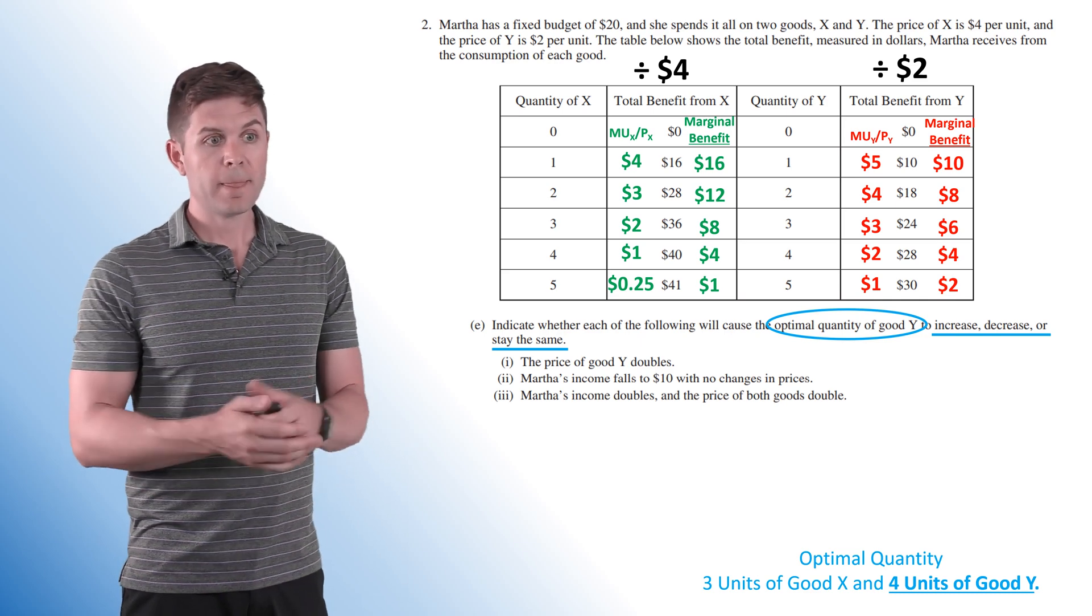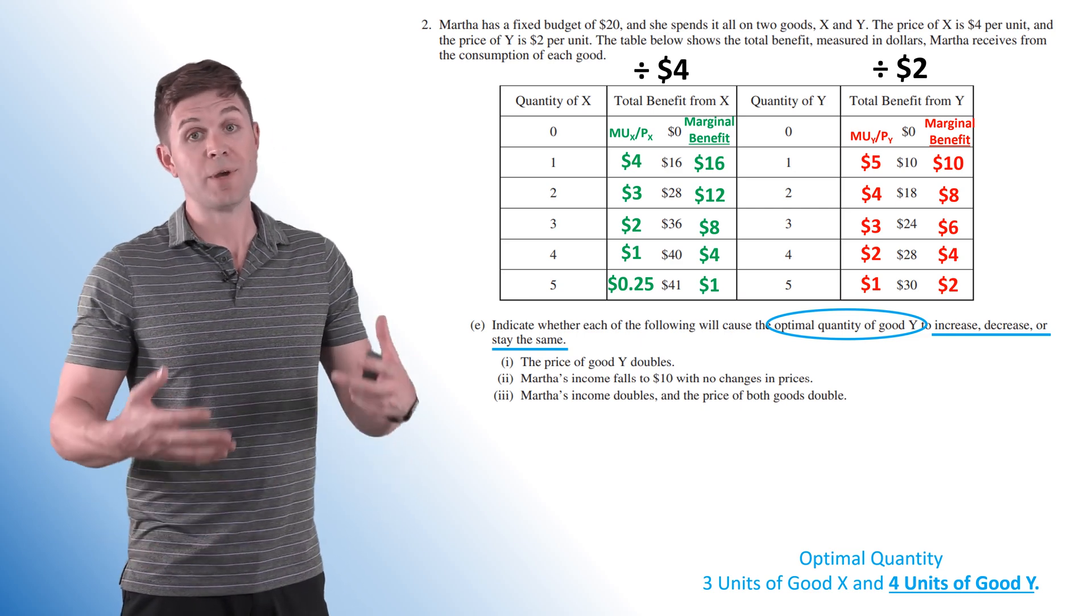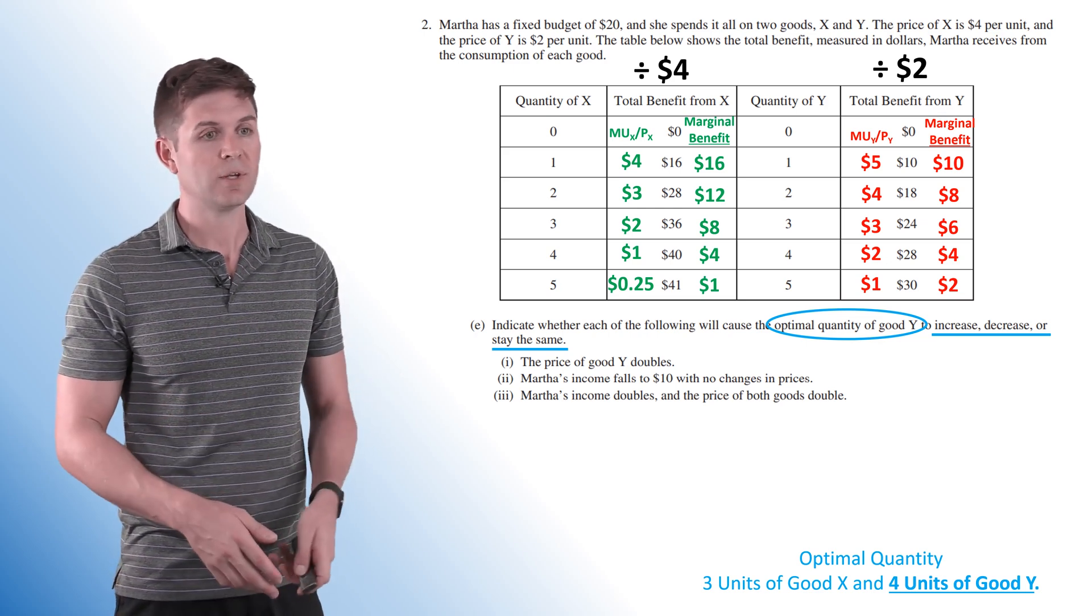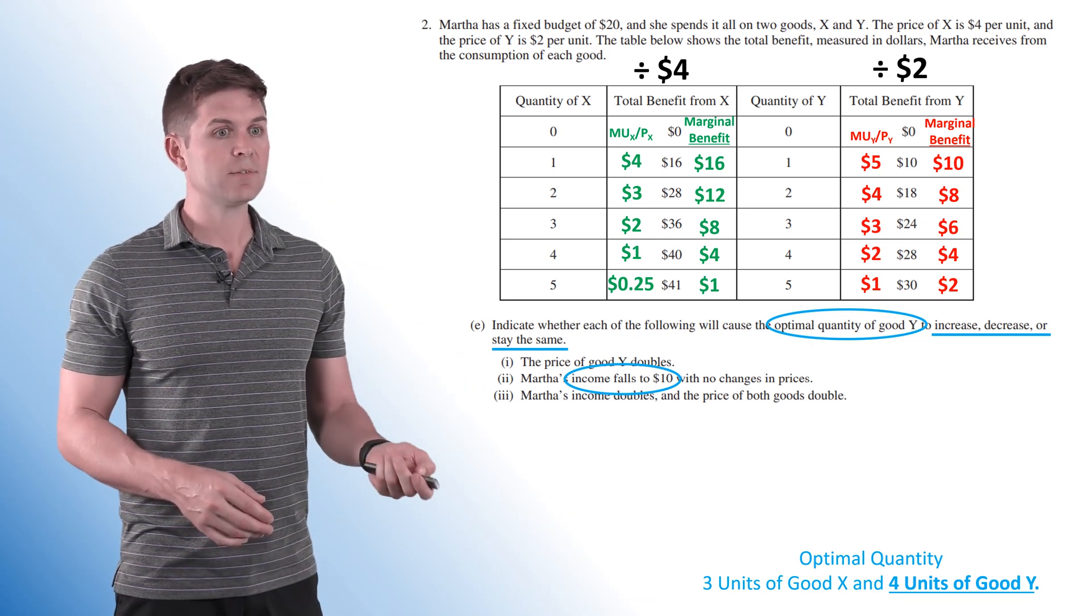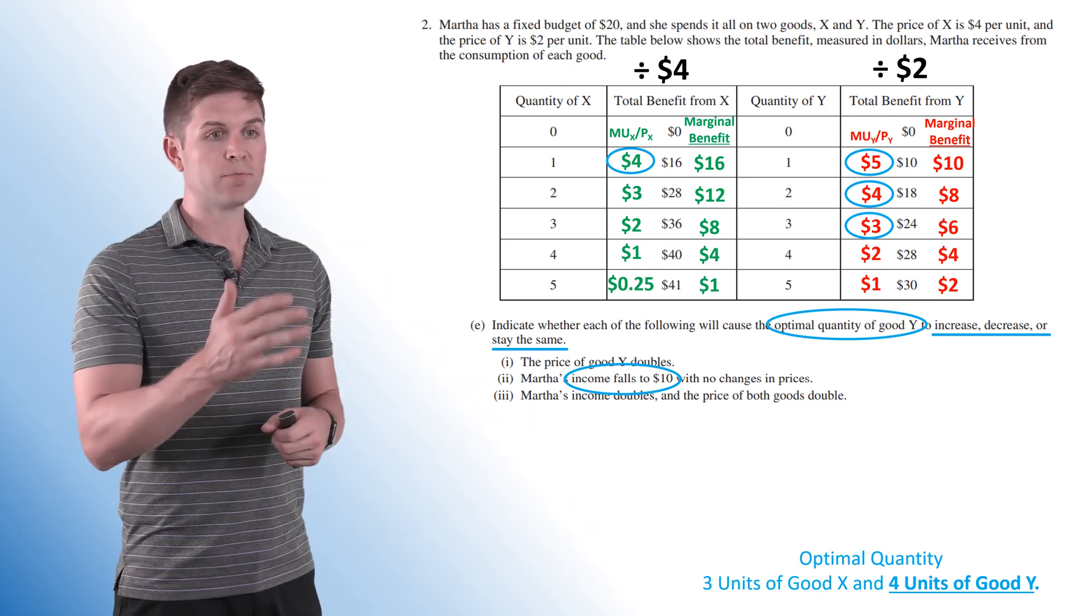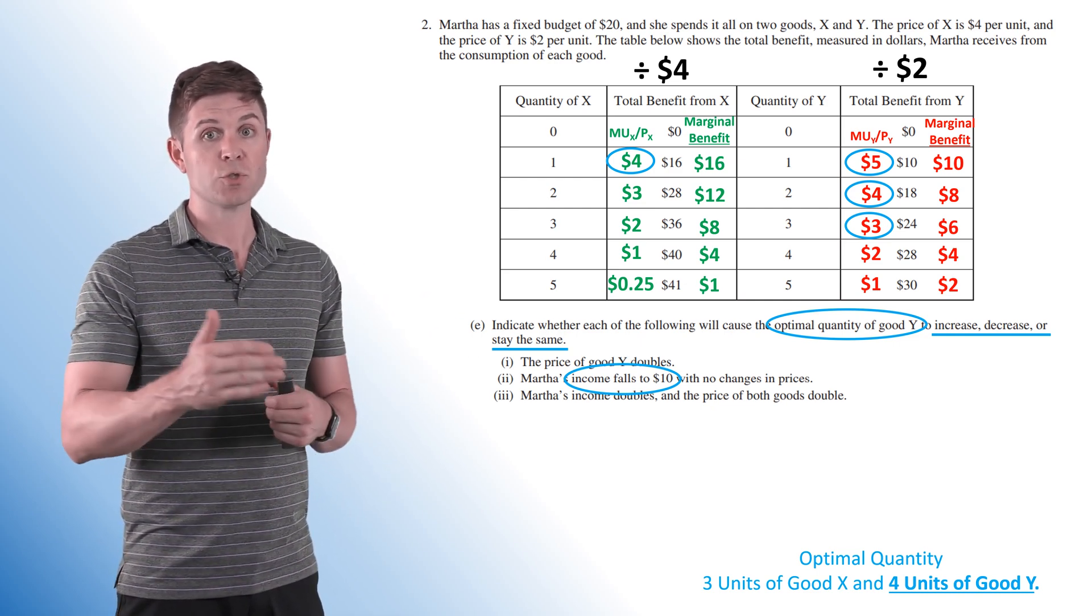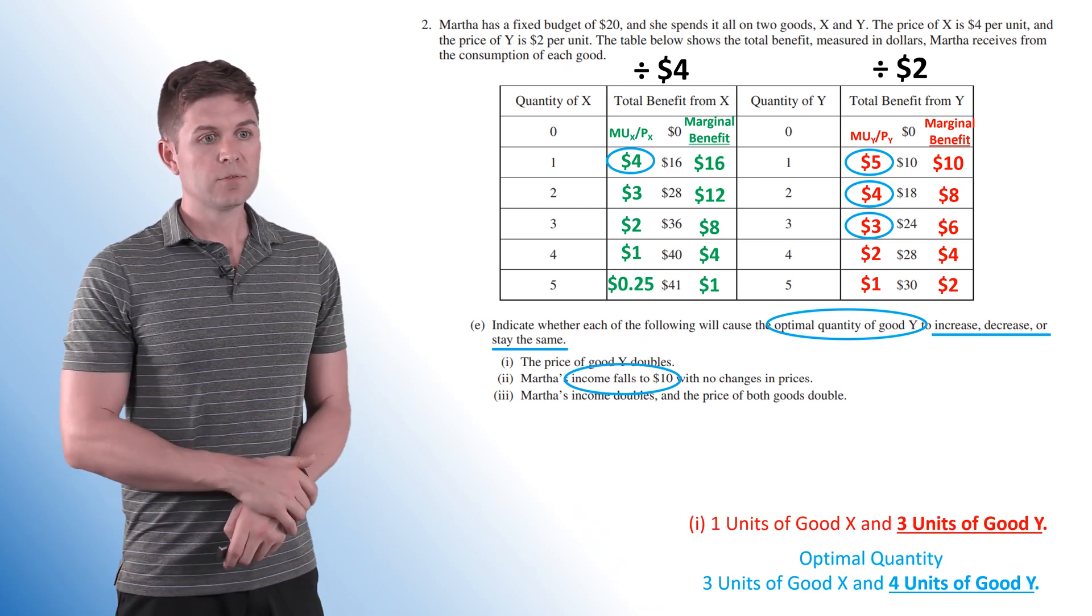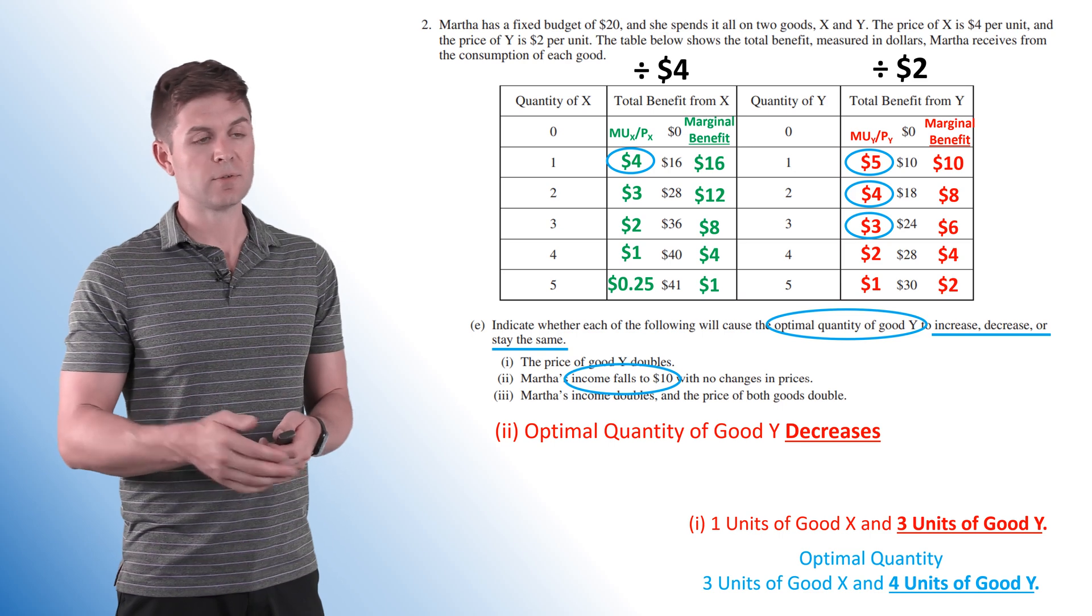All right, next one. Martha's income falls to $10 with no changes in prices. So she just has less money. This is another obvious one. You have half the money that you did before, you're going to be spending less on both goods in most situations. There are some exceptions to that, but in this case, losing that much income is going to drop it. But let's see how. All right, with $10, this is all I can afford to spend. So I'm buying less Y. I was buying four, now I'm only buying three. And this one's kind of a confusing one because you can't even match up the marginal utility per dollar spent for the last unit of each good. But either way, we are buying less Y. So one unit of good X, three units of good Y, optimal quantity of good Y decreases. That's our part two.